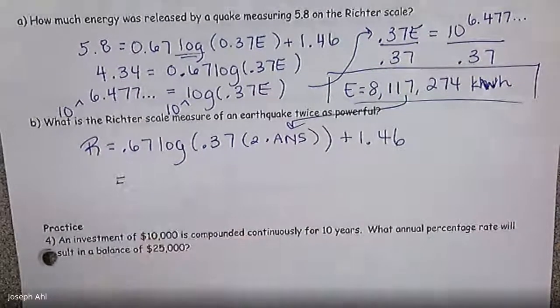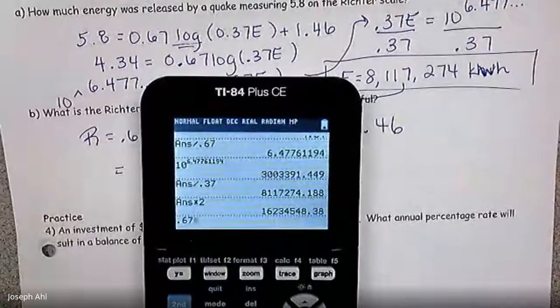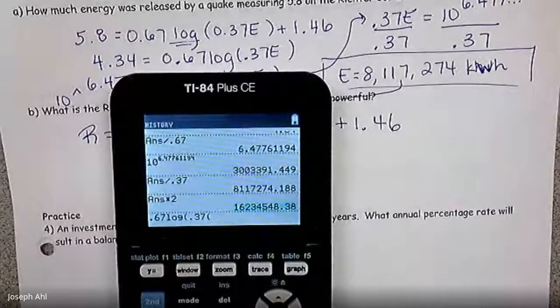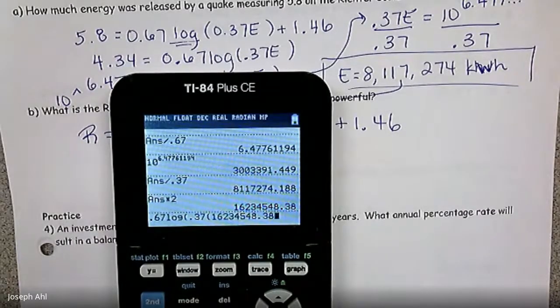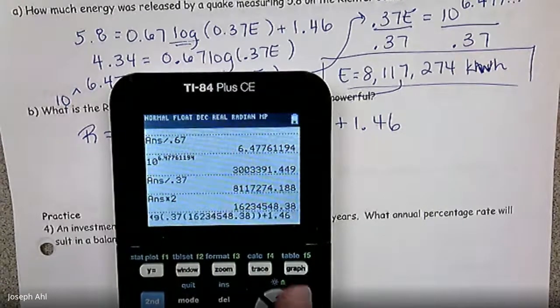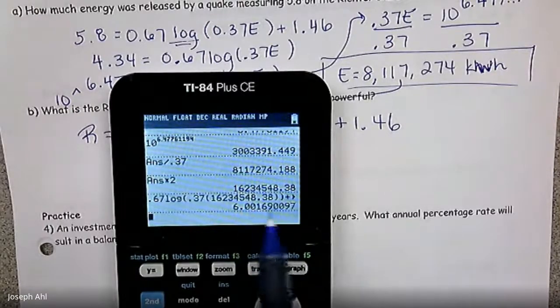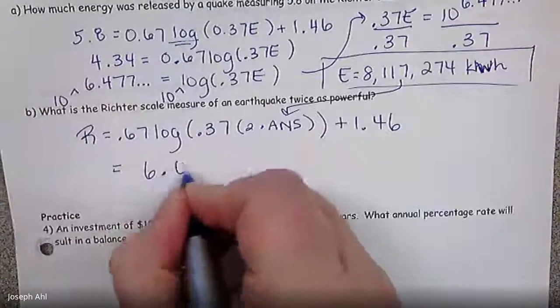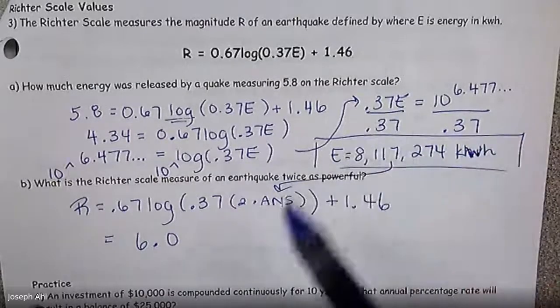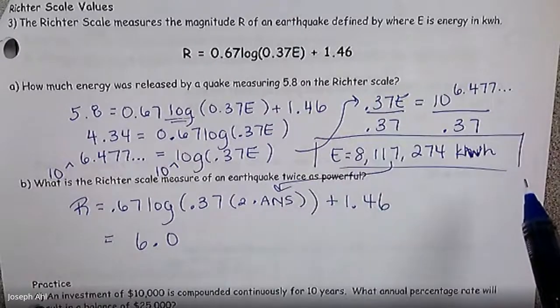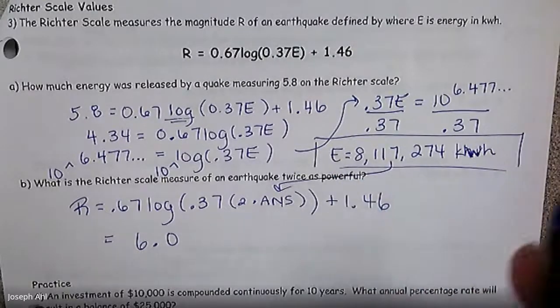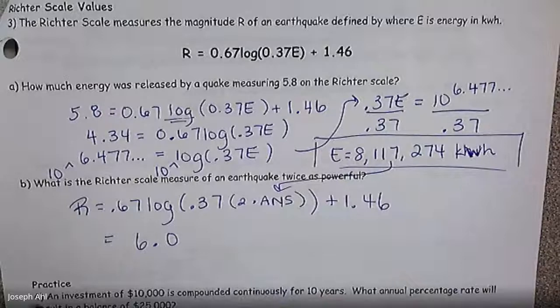So as far as using that last answer, let's make sure we type that in carefully here. So it's going to be 0.67 times the log of 0.37 times this answer. I already doubled that energy amount. So I'm going to do 0.37 times that close parentheses twice. And then don't forget about plus 1.46 at the end. When I do that, we get that the Richter scale rating for something that's twice as powerful is only a 6.0. And it's again, because of the nature of how log growth works, it's very slow. So if you double the amount of energy, which would be an X value, the Y value, that Richter scale only changes by 0.2. That's the change by doubling the input from 8 million to 16 million. That's pretty wild.